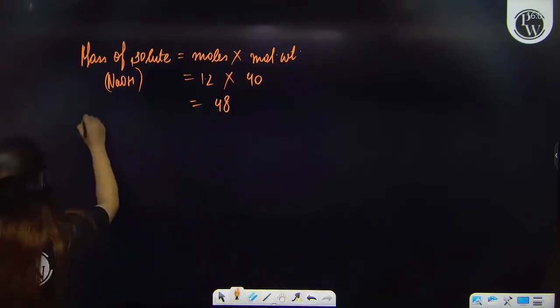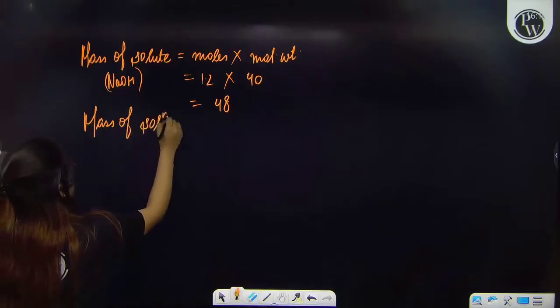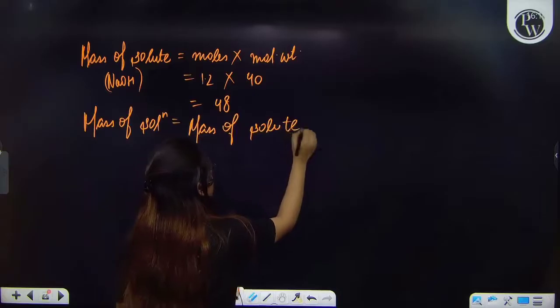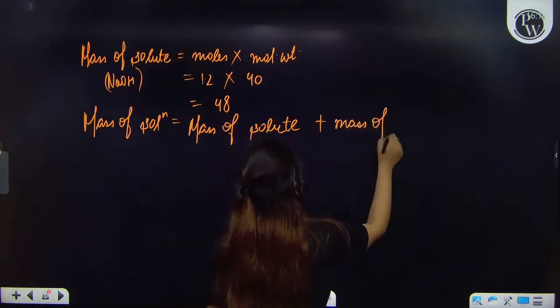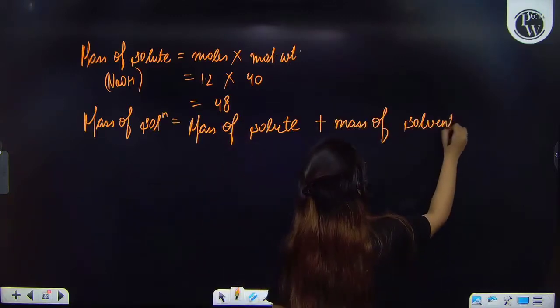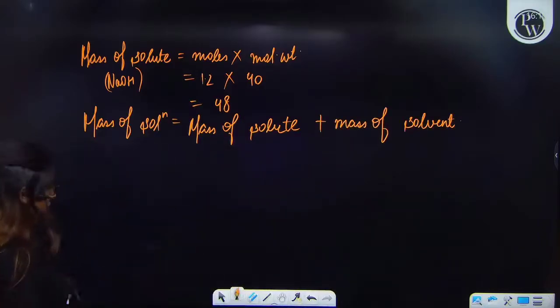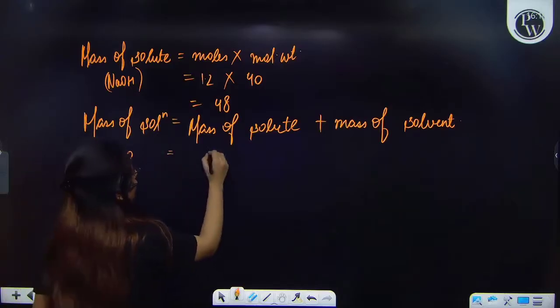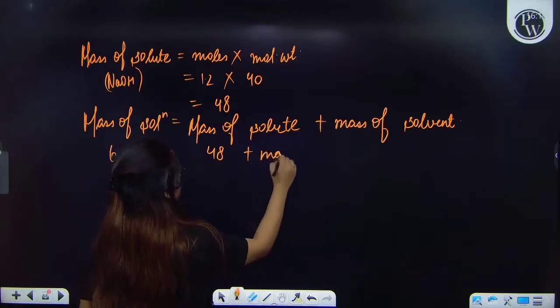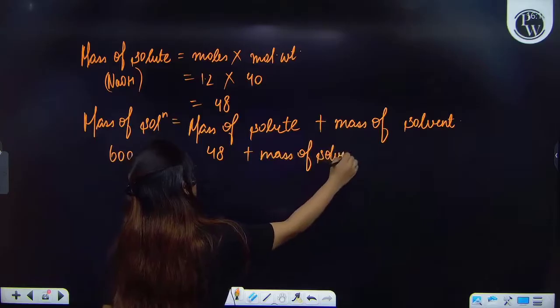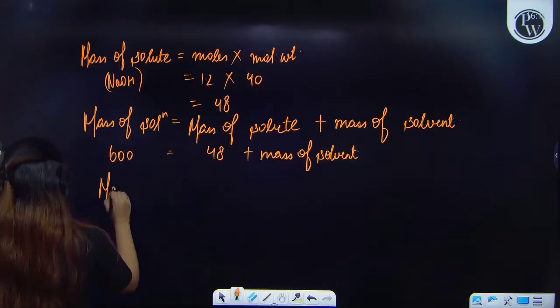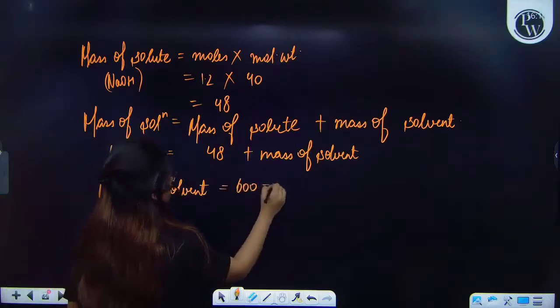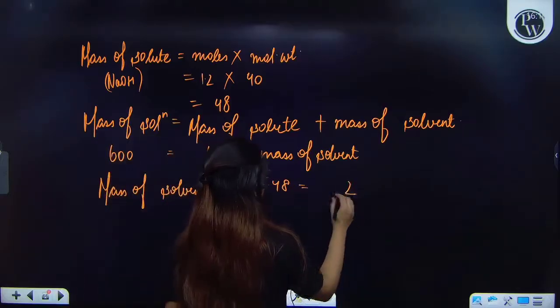Now you know that mass of solution is equal to the mass of solute plus mass of solvent. So the solution's mass - how much we got? We have got 600 gram mass of solution and 48 gram mass of solute. And so therefore the mass of solvent will be 600 minus 48. And that will come out to be 552.